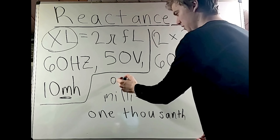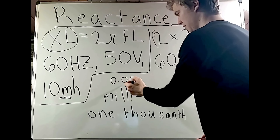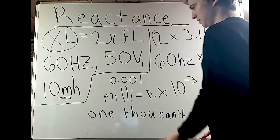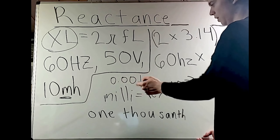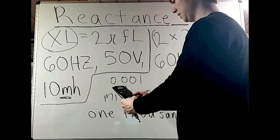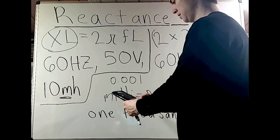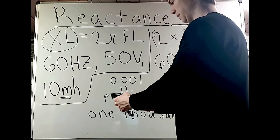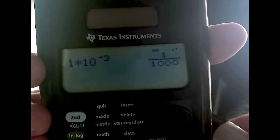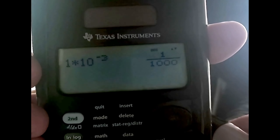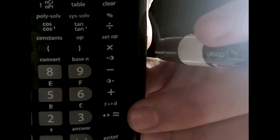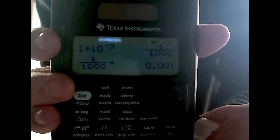When you have milli, you're dealing with a thousandth — written as a decimal, that's 0.001. So on a calculator, 1 × 10⁻³ equals 0.001, which also equals one-thousandth. Therefore, 10 millihenries converted to henries gives us 10 × 10⁻³ = 0.01 henries.